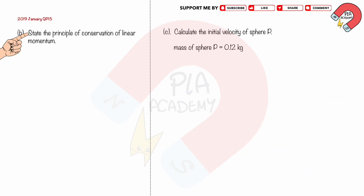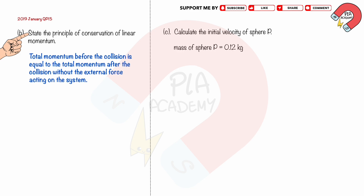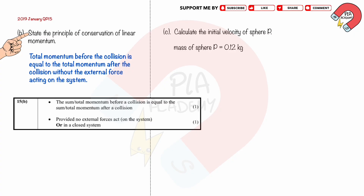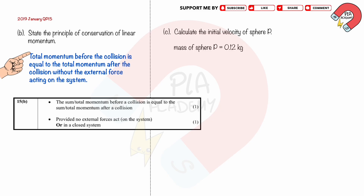Part B. State the principle of conservation of linear momentum. The total momentum before the collision is equal to the total momentum after the collision, provided no external force acts on the system. You get 2 marks: the sum of total momentum before a collision equals the sum of total momentum after the collision, provided no external force acts on the system or it is a closed system.